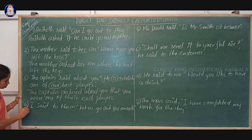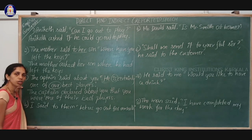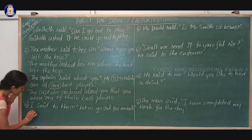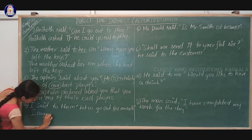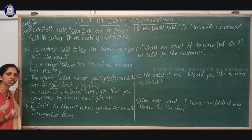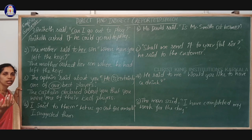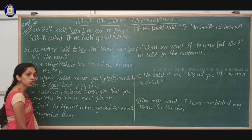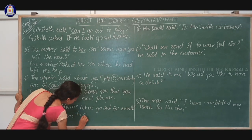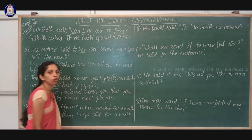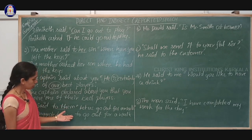Look at the fourth sentence. I said to them, 'Let us go out for a walk.' What kind of sentence is this? It is a suggestion. For imperative sentences — which include suggestions, commands, orders, and requests — we have to use the infinitive. So: I suggested them to go out for a walk. This is the reported speech of the above sentence.